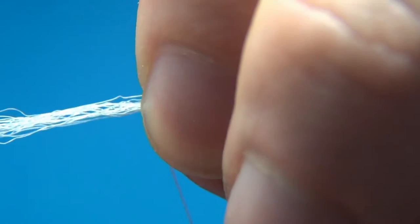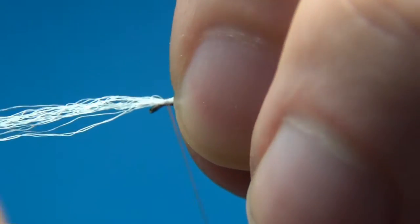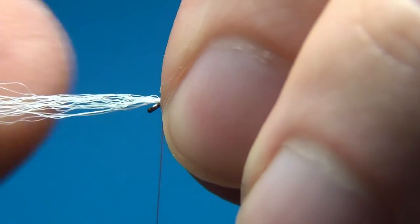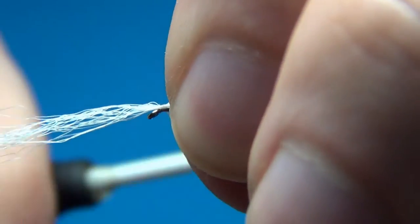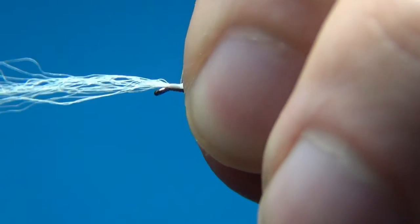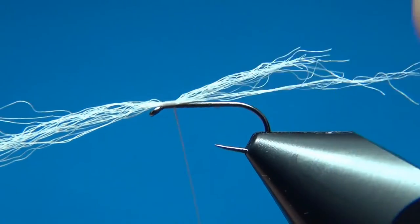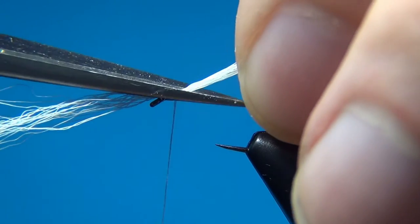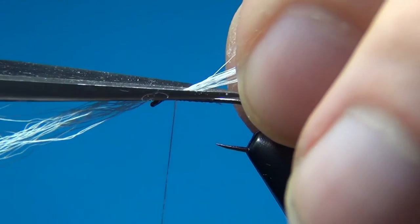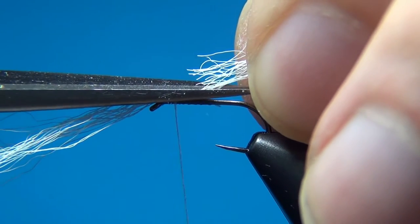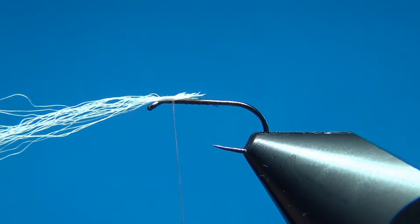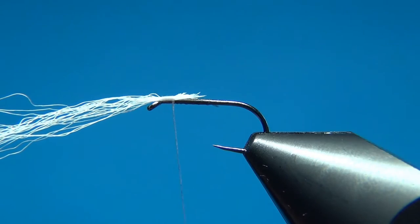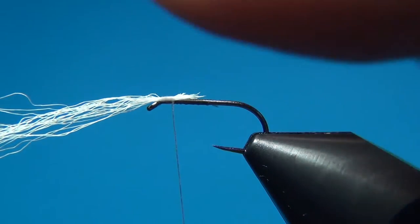Then we're going to tie this in right here at the eye and you want most of it facing forward. Then take it back a few turns and really pull on your turns to bind down the material. Then come in with your scissors and we're going to make this angled cut to give a nice tapered body.